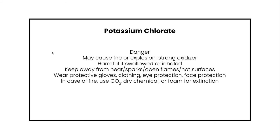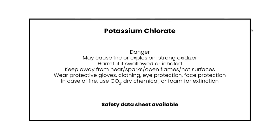Those are the statements I pulled out, along with information on how to extinguish a fire involving this chemical, which is really important information. The last key piece we need is the safety data sheet available statement at the bottom. If we're creating a classroom label, you would put your name on it — probably in the top left or top right corner. That's how we create a WHMIS label. Now go practice this skill and give it a try.